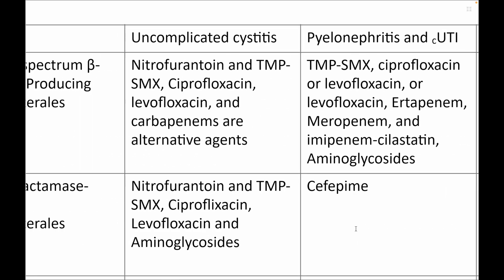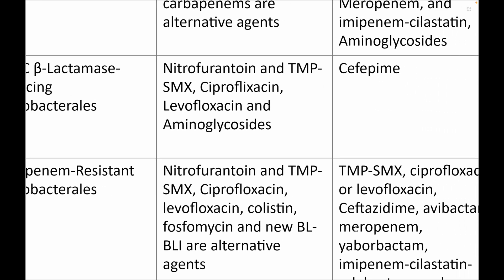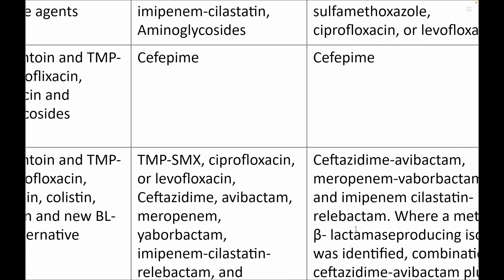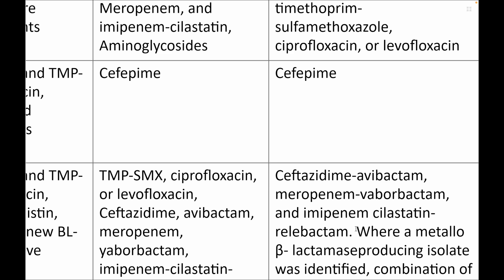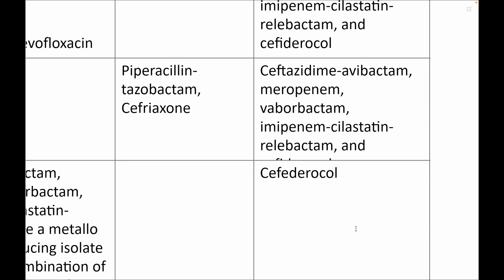Next, we go to AmpC-producing organisms. For uncomplicated UTI caused by AmpC producers, you go for nitrofurantoin, trimethoprim-sulfamethoxazole, fluoroquinolones, and aminoglycosides. For complicated infections, you can give cefepime — which can be given both for UTI as well as outside UTI.